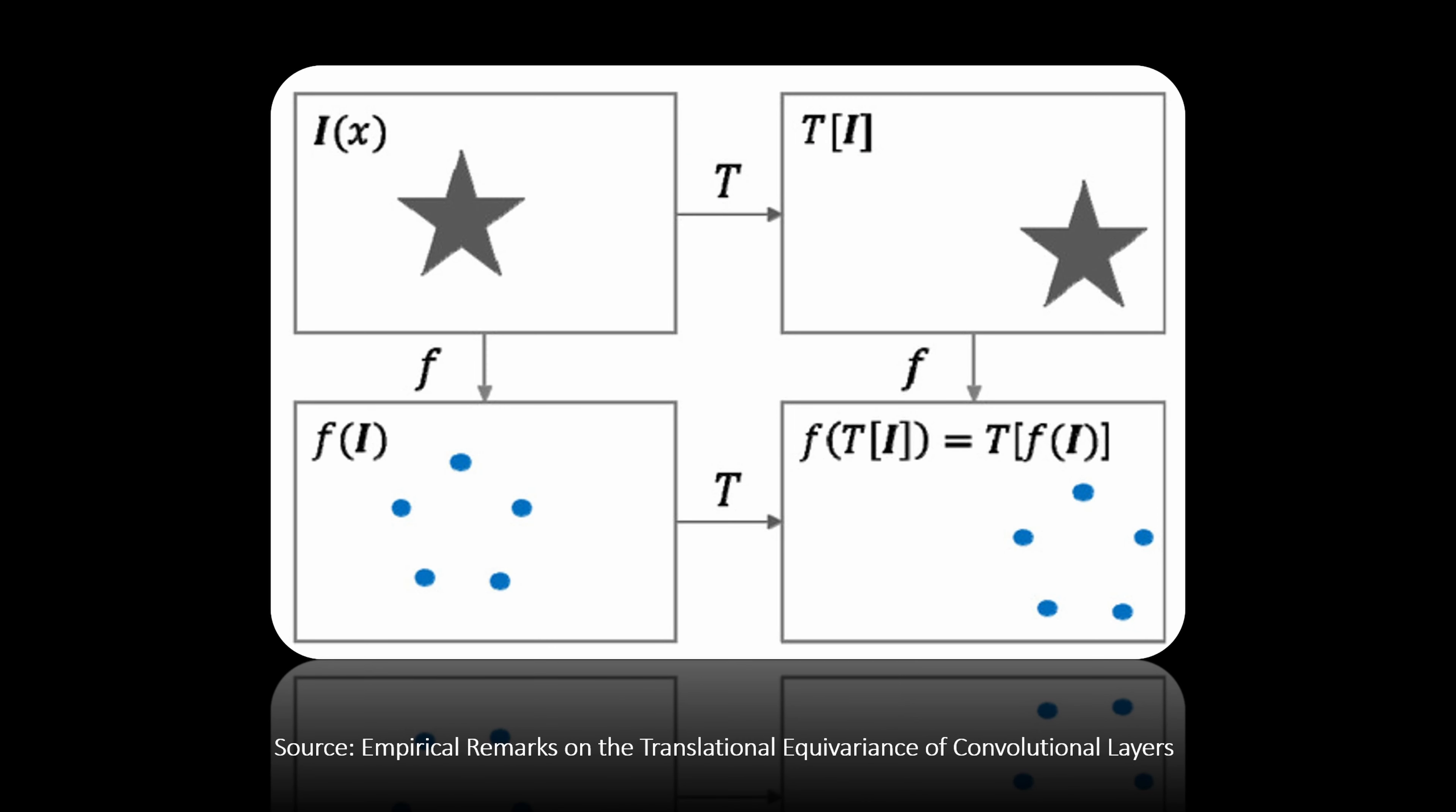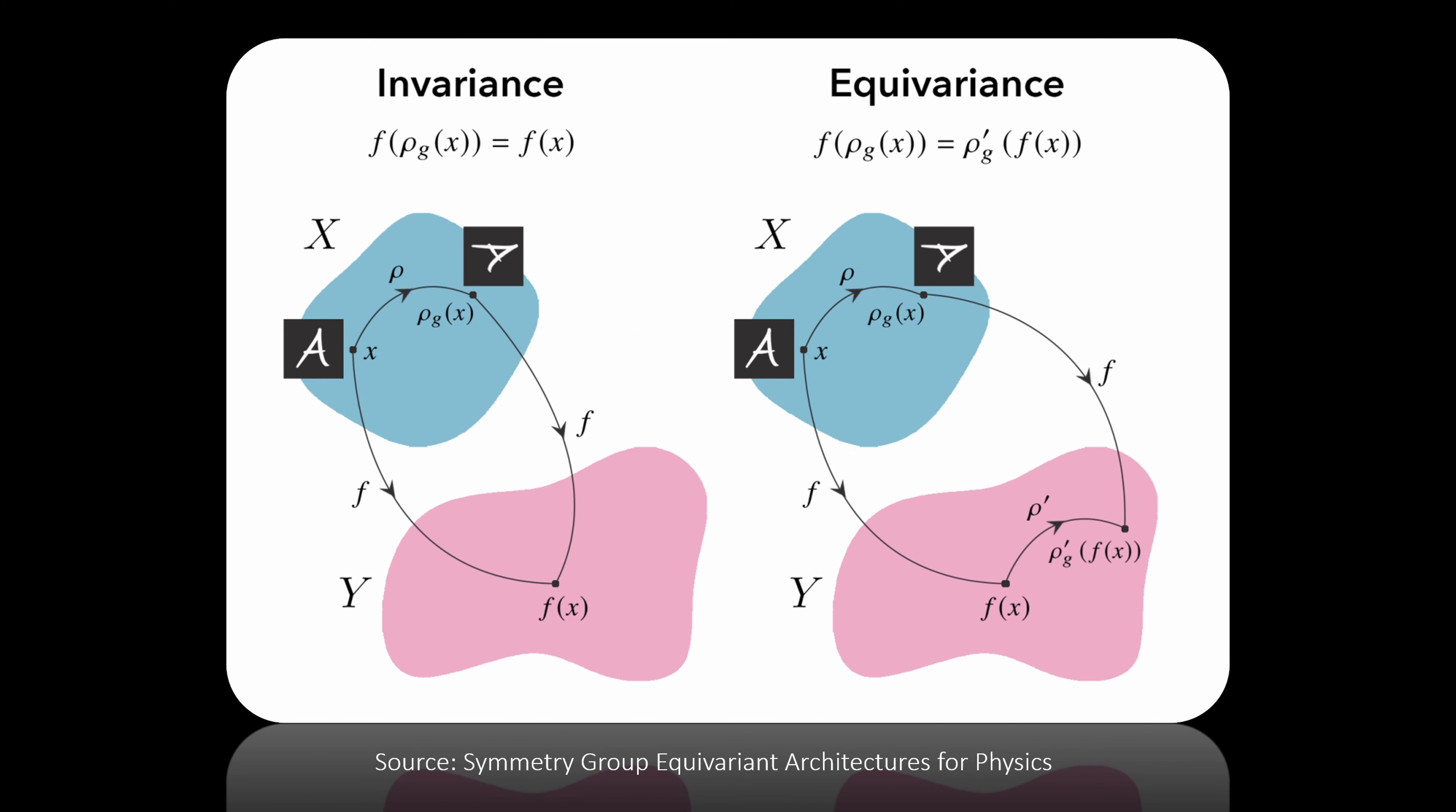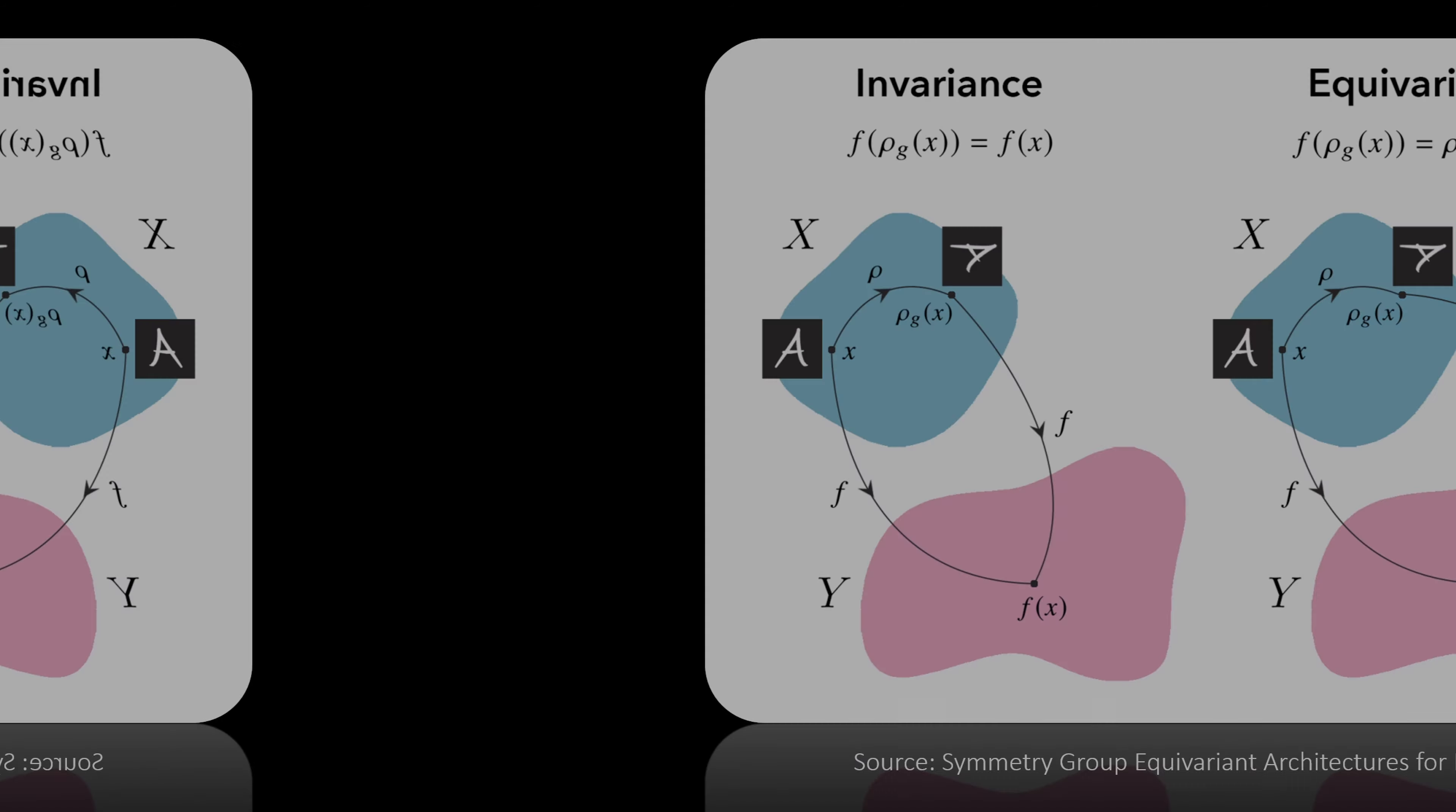A common way to visualize this graphically is with this diagram. This is the case for equivariance. Applying some transformation and then passing through the neural network should lead to the same result as first going through the model and then applying the transformation. Or, if you like to think of spaces, I also find this chart nice. Invariance maps to the same point in the target space, independent of the transformed starting point, and equivariance transforms in a predictable way in the target space after transformations in the origin space. Sometimes, invariance is also referred to as dropping spatial information, which can be seen nicely here.